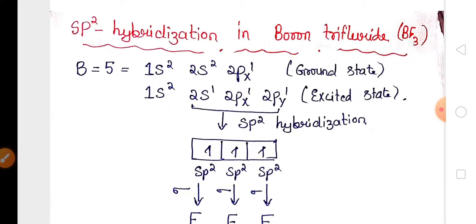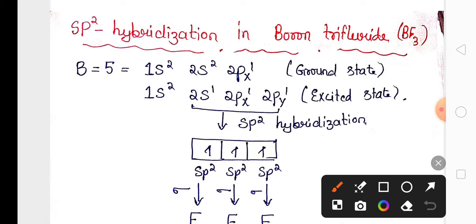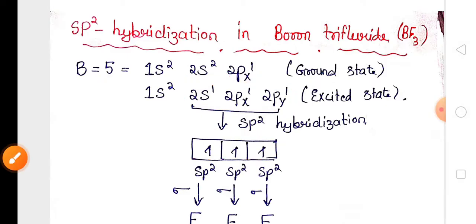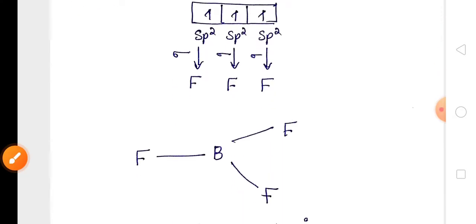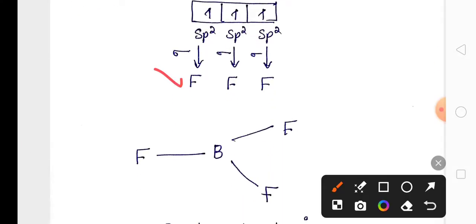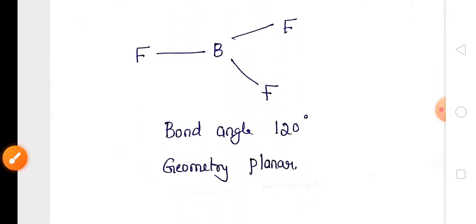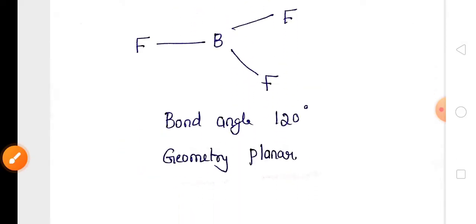Sp2 hybridization is illustrated by boron trifluoride (BF3), where boron has atomic number 5. In the excited state, one s orbital and two p orbitals undergo sp2 hybridization to produce three sp2 hybrid orbitals. Each sp2 hybrid orbital axially overlaps with the p orbital of fluorine to form a sigma bond. The geometry of BF3 is trigonal planar with a bond angle of 120°.